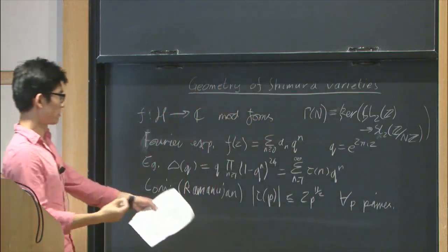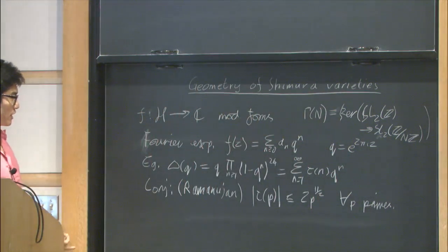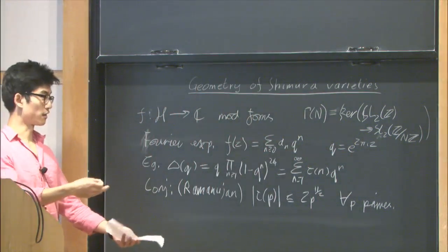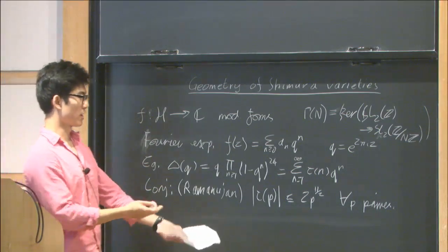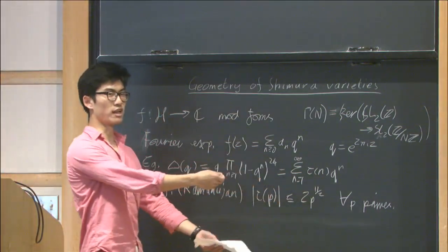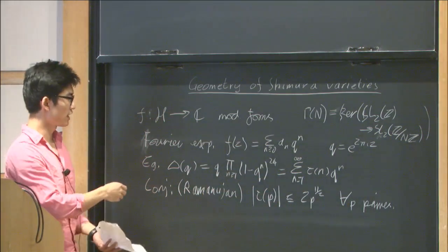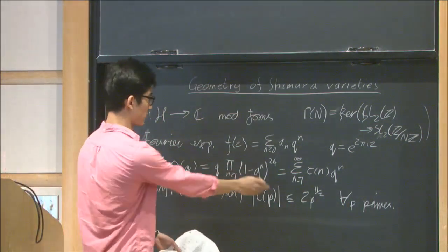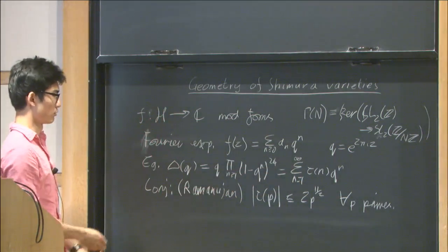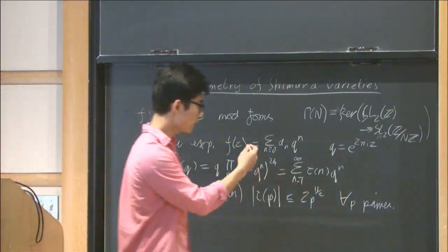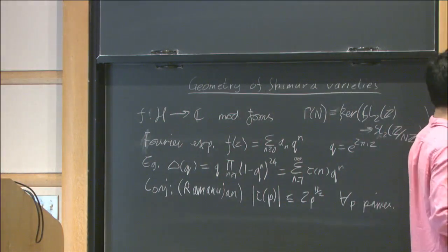In the 50 years after Ramanujan made this conjecture, people tried to attack this conjecture using analytic methods, and they did quite well. They managed to get this bound down to 2p^(11/2) plus some very small exponent. But using analysis, they weren't able to hit this magic number, and the solution eventually came, which is due to Deligne, and the solution used algebraic methods.